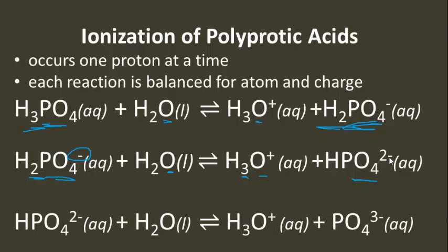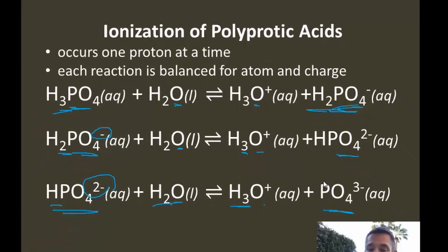In the next step, hydrogen phosphate reacts with water and produces a hydronium ion and a phosphate ion. This one is also balanced for atom and charge. We see one phosphate on each side; three hydrogens — one there and two there; one oxygen on each side. The net charge on the reactant side is minus two, and if we sum plus one and minus three on the product side, we also get minus two. So this reaction is balanced for atom and charge — a very important concept.